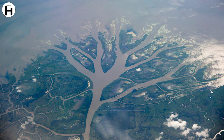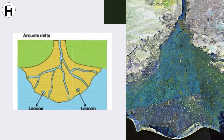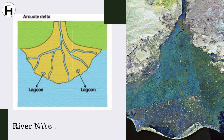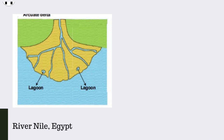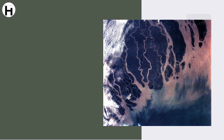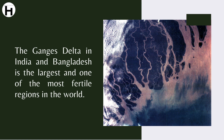Types of delta: The Arcuate delta is a fan-shaped delta, e.g. the Nile delta in Egypt. Such deltas are the most extensive ones. The Ganges delta in India and Bangladesh is the largest and one of the most fertile regions in the world.